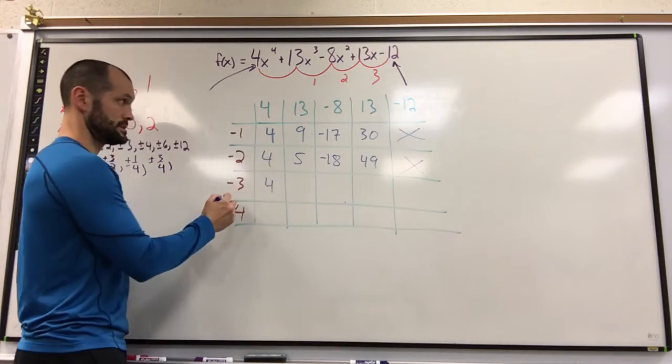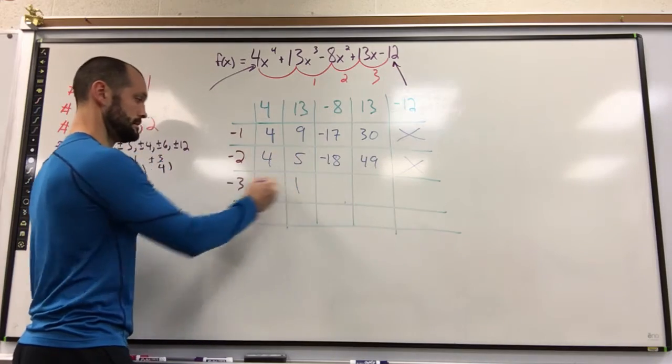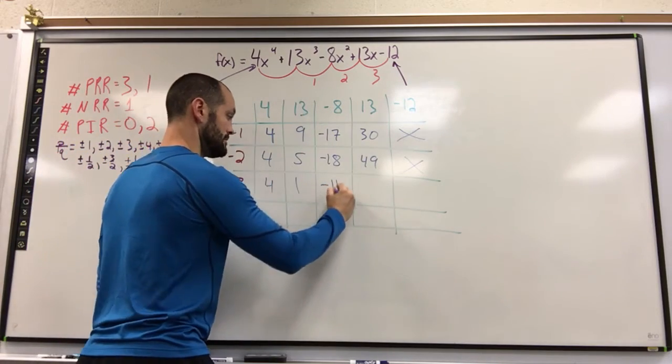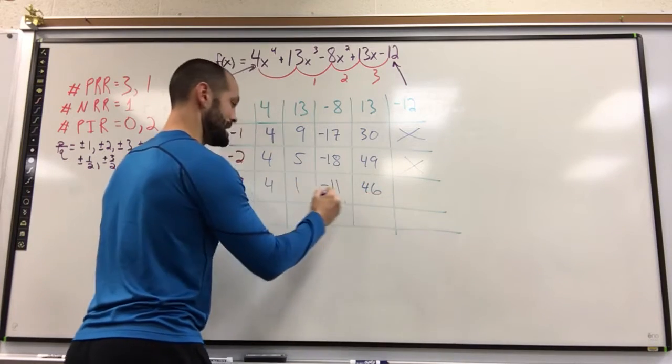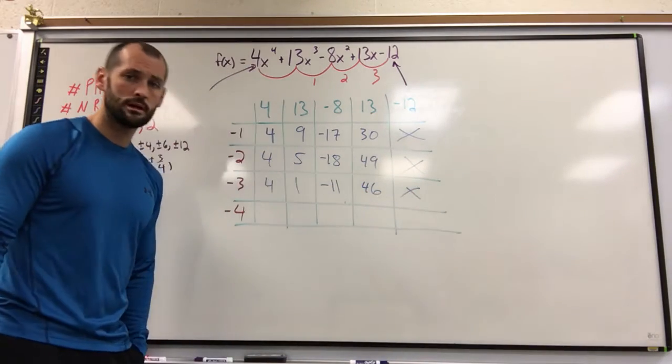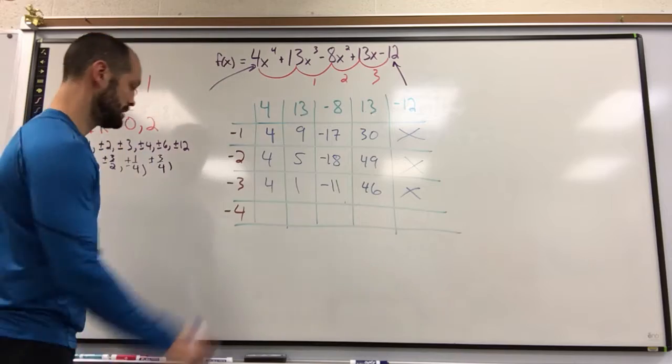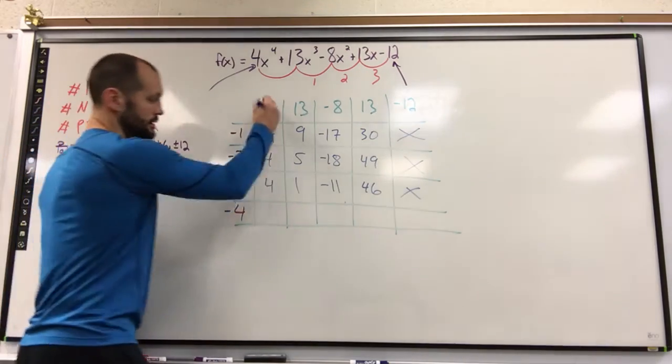4 times negative 3 is negative 12. 1. Negative 3, we get negative 11. 33, we get 46. Ah, not even close. Might have to do it a couple times. Come on, negative 4.